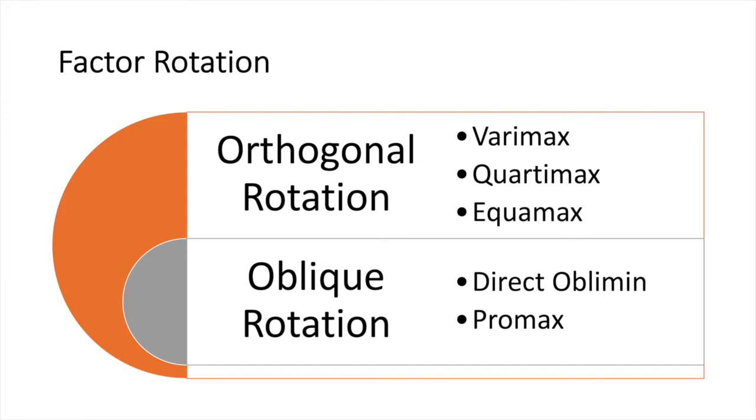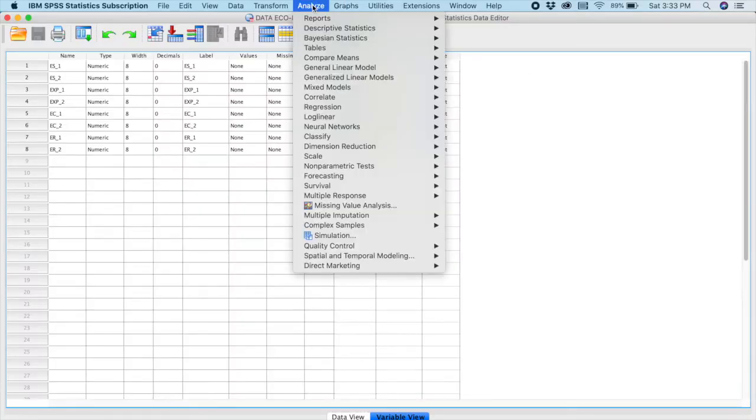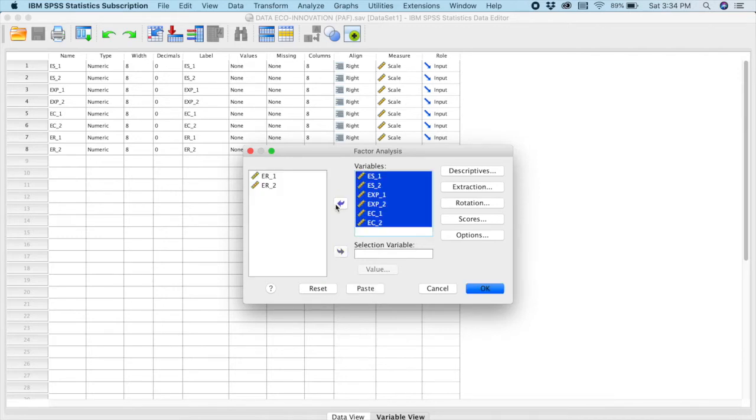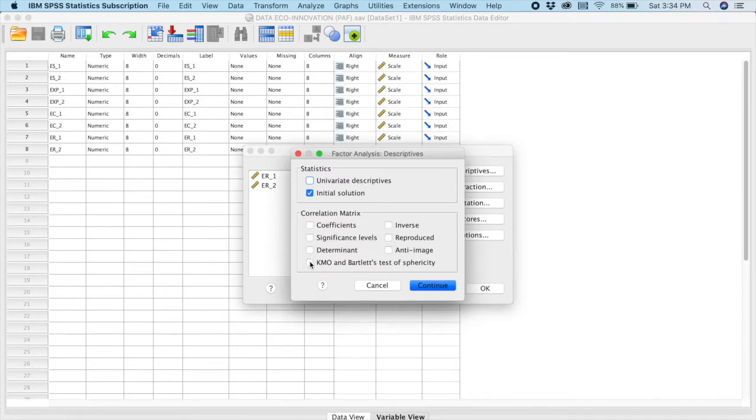In SPSS, you'll go to Analyze, Dimension Reduction, Factor Analysis, and now we're going to pick these variables here. You can see the first one here is ES1 and ES2 are the items for environmental strategy. EXP1 and EXP2 is for export behavior and I have EC1 and EC2 for environmental collaboration. So I'm going to pick all these variables and transfer them here. For descriptive, I will take KMO and NT Image. Continue.